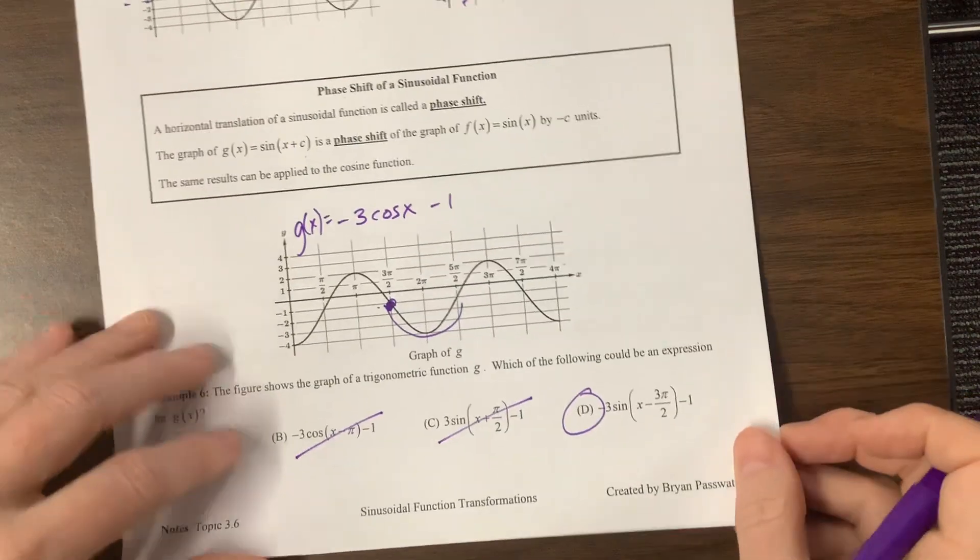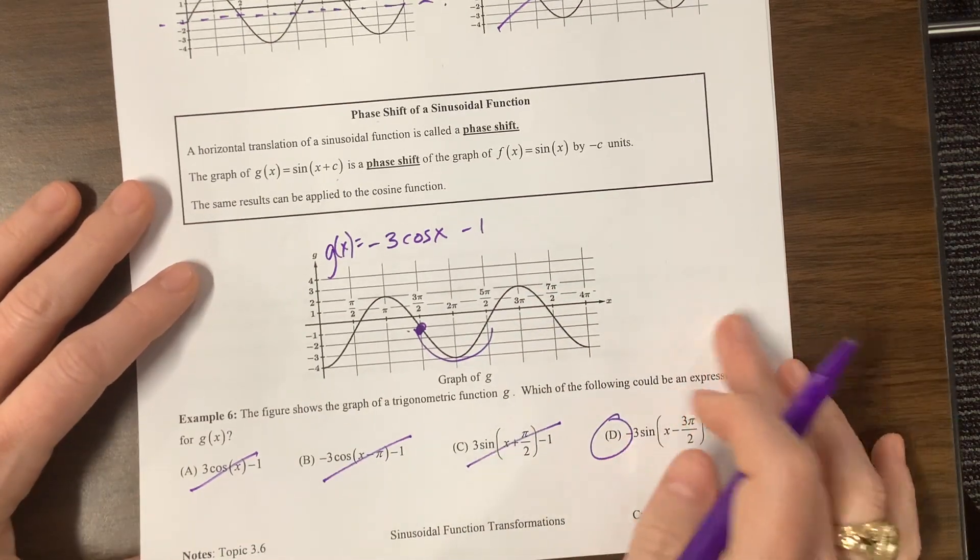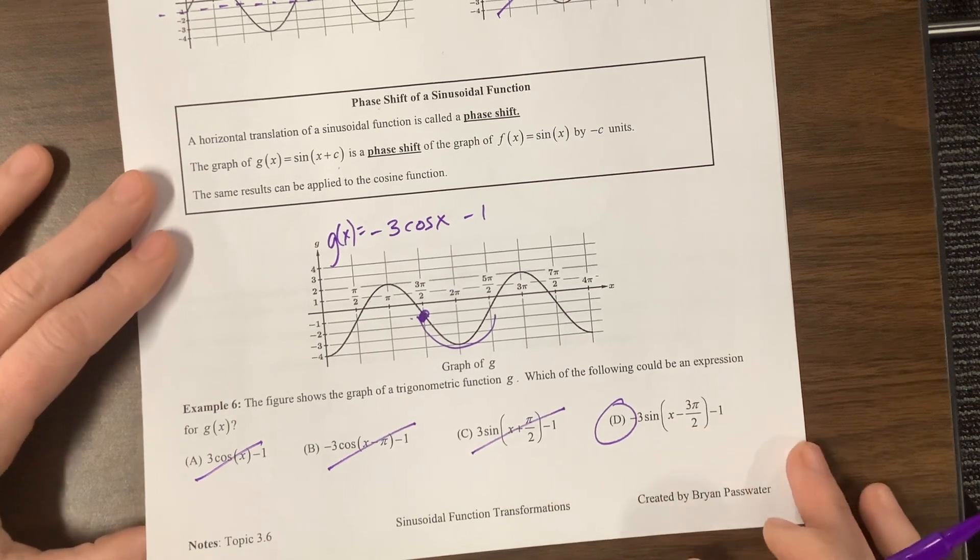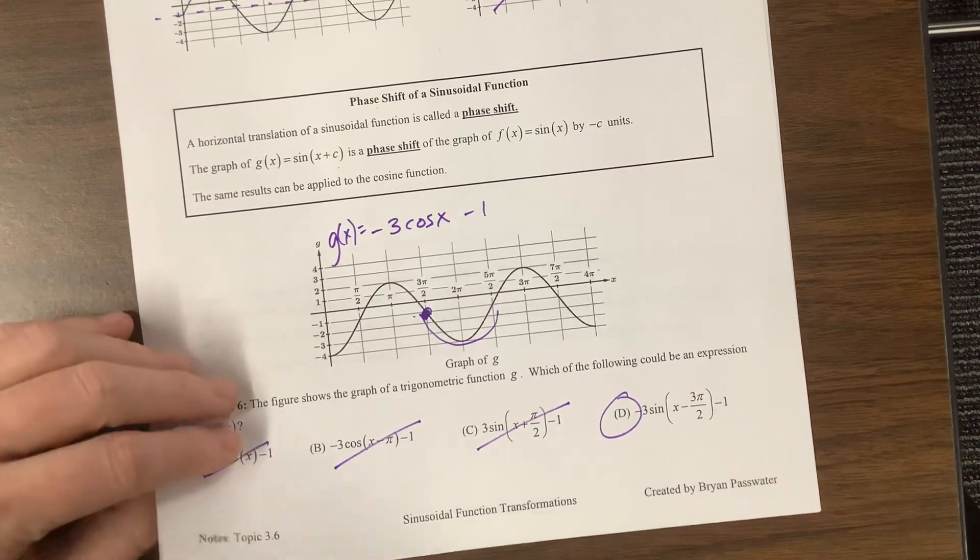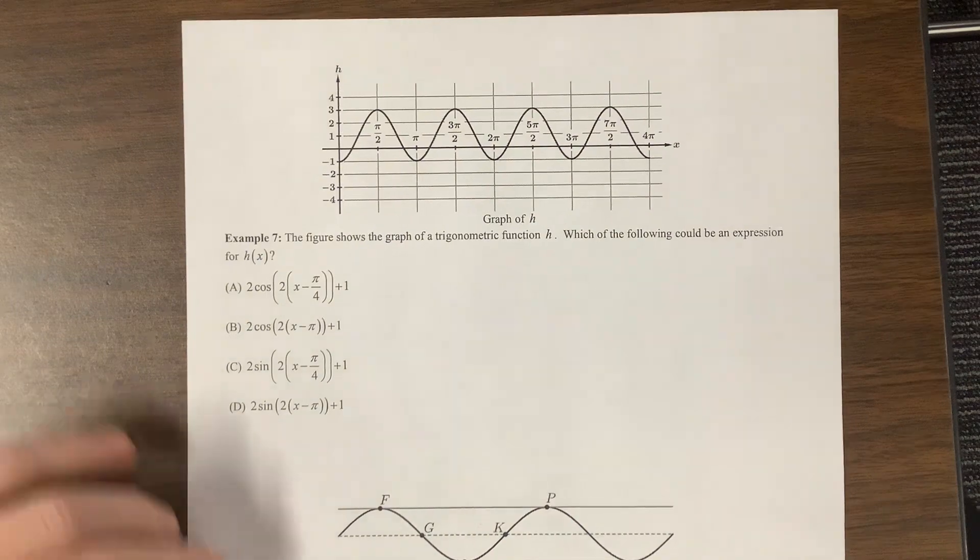What I have historically done with my kids is I'll give you a graph, and I'll say write this as a sine function, write this as a cosine function, or I'll say which of the following equations is not equivalent to the graph or does not model the graph. I like to do those two, and we're going to figure out what AP does as we go through this.